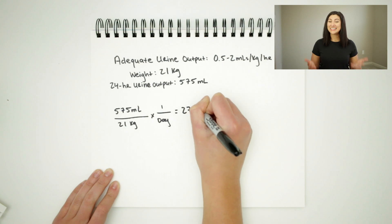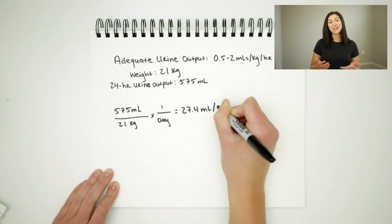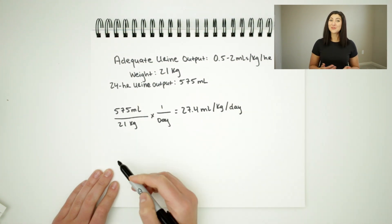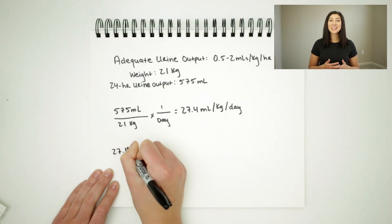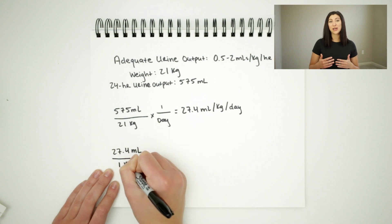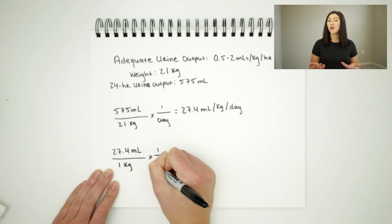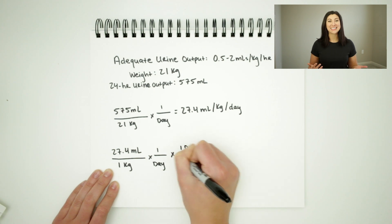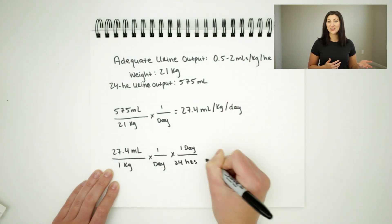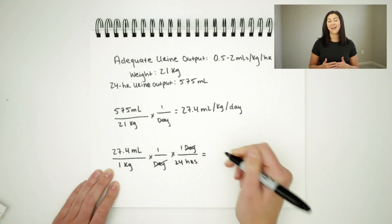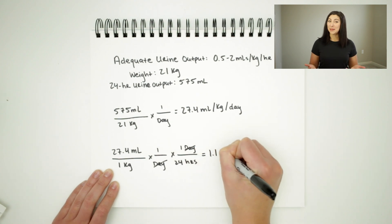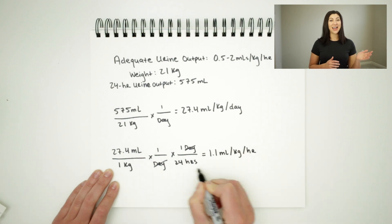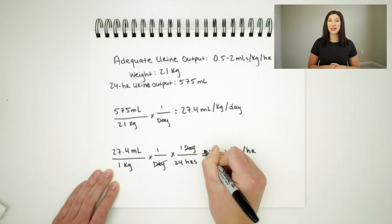But as you can see, our range that we're given is in milliliters per kilogram per hour. So we'll need to divide through further to see what this volume is in milliliters per kilogram per hour to see if that number falls within the acceptable range. Remembering our rounding rules, we can see that this patient has made 1.1 milliliters per kilogram per hour of urine. This is acceptable because we know that our range is 0.5 to 2 milliliters per kilogram per hour.